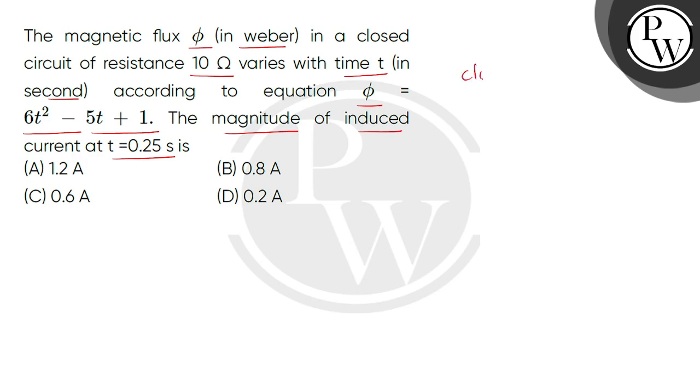Given है हमें एक closed circuit जिसका resistance है 10 ohm और यहाँ पर जो magnetic flux है वो time-wise change होता है क्योंकि magnetic flux का time equation given है 6t² - 5t + 1 और हमें इसका induced EMF का magnitude find करना है जब t की value 0.25 second है.